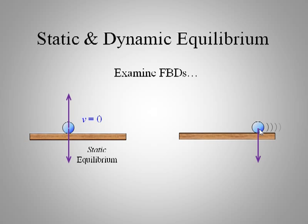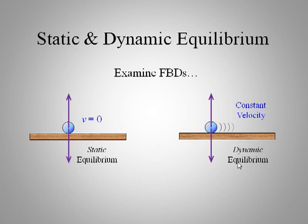Here we have the same object but it's moving now. We still have a weight vector and we still have the normal force. Again these two forces act on the same object and they balance each other. They're equal and opposite. The ball is moving at constant velocity. This is dynamic equilibrium. Equilibrium again meaning the forces are balanced. They cancel. But it's moving at constant velocity.